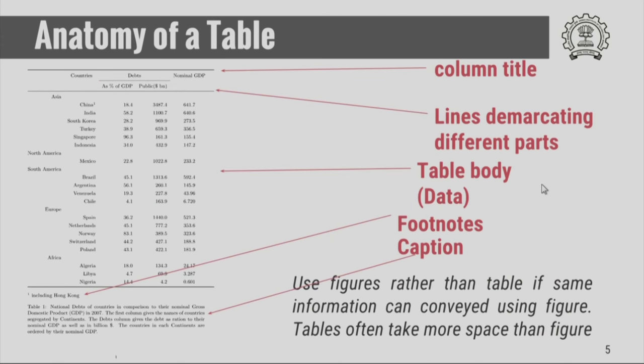This is an example of a good table. When making a table, you have to put a column title for each column, use lines to demarcate different parts of the table, and put the data in the body of the table. If there are data points requiring explanation, put those in a footnote, and write a caption generally at the bottom. You should prefer figures over tables when you can convey the same information visually, because figures give a visual impression of the data and people like to see figures, whereas tables are just a bunch of numbers.